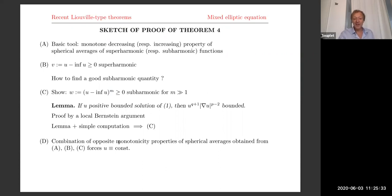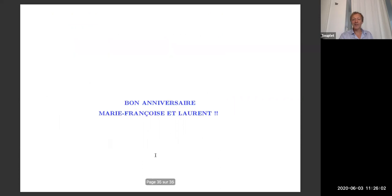Now if you combine these opposite monotonicity properties of spherical averages — that V is super-harmonic and W is sub-harmonic — you have monotonicity of spherical averages going in opposite directions. At the end, the only way this can be consistent is by having U constant. That's how the proof goes. And I would like to congratulate Marie-Françoise and Laurent again for the very inspiring and friendly interaction that we had in the past roughly 20 years. Thank you.